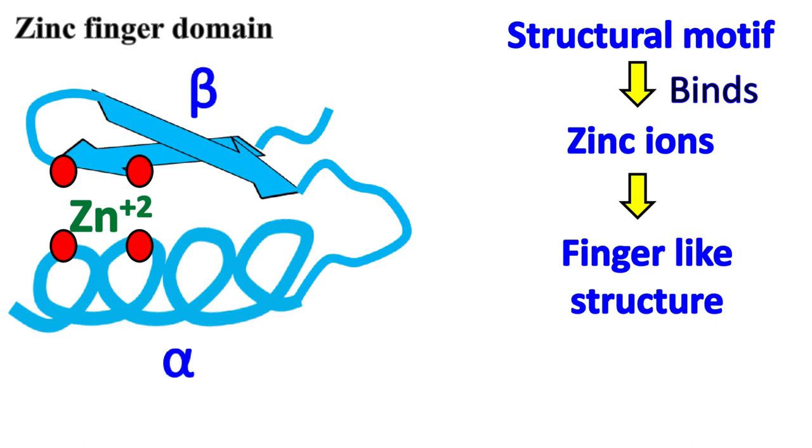In presence of zinc ions, the peptide between the beta sheet and the alpha helix attains this finger-like structure. Hence, it is known as zinc finger motif.